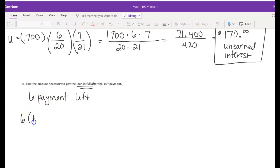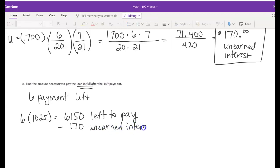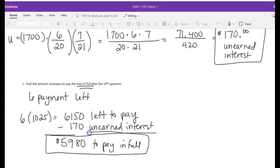And back in the beginning, we said that each payment was $1,025. So that's a total of $6,150 left to pay. But remember there's an unearned interest. The bank didn't earn this $170. You get to keep that minus the $170 of unearned interest. So if we subtract, we get a total of $5,980 to pay in full. Because we don't have to pay that unearned interest. The bank didn't earn us paying them that money.